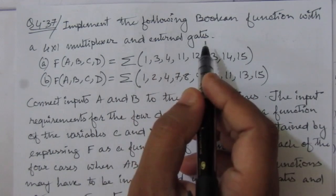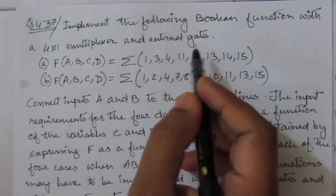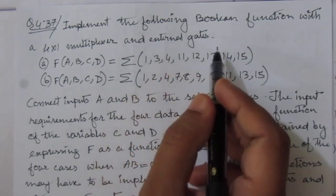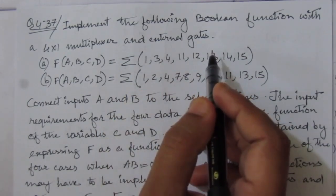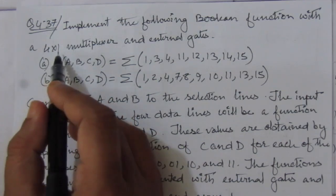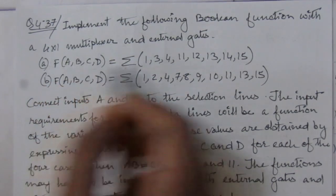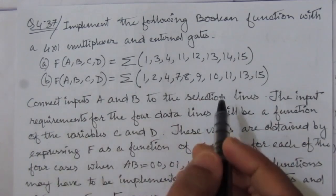There is no constraint about which type of external gate you can use. You can use any type of external gates, but you have to use only one 4-to-1 multiplexer to realize these functions.